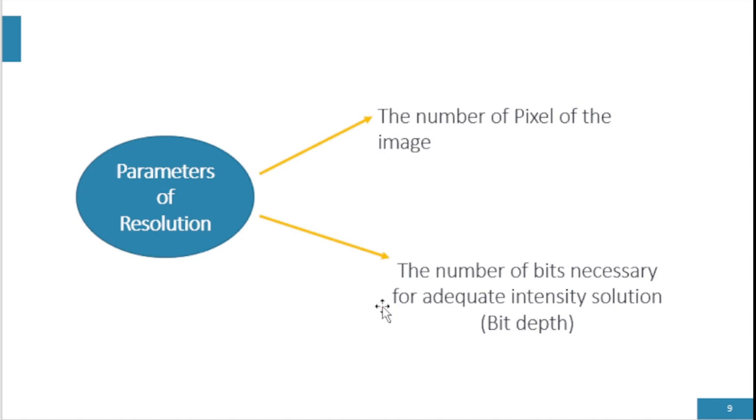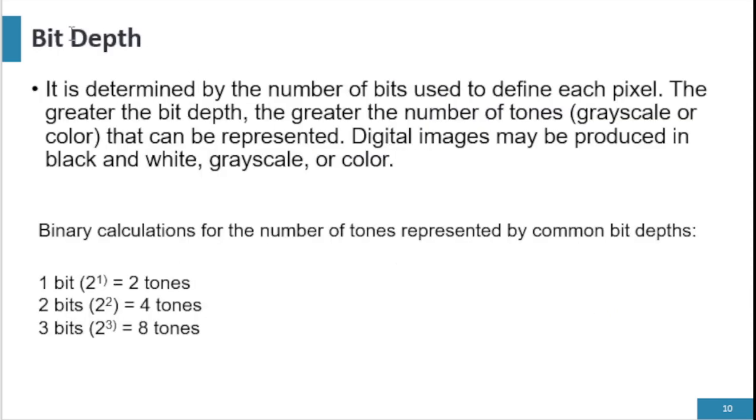There are two parameters of resolution. First is number of pixels and second is bit depth. The number of pixels of an image is the first parameter and the number of bits necessary for adequate intensity resolution is the second parameter. Bit depth is determined by the number of bits used to define each pixel. The greater the bit depth, the greater number of tones, grayscale, or color that can be represented.